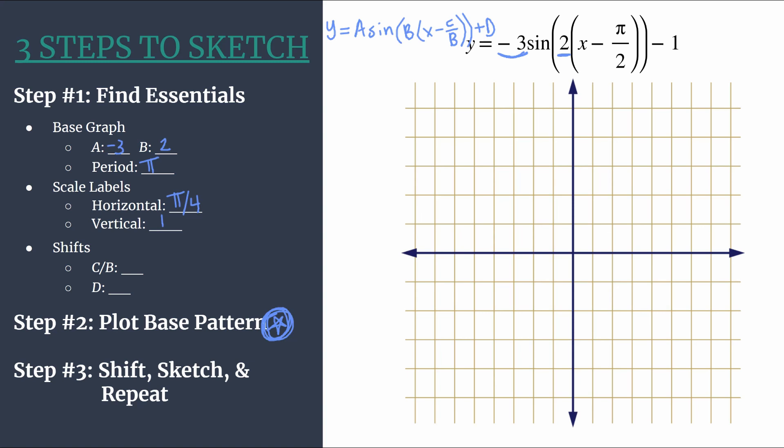So we'll start with the horizontal axis. We're counting by one π over four. So one π over four, two π over four reduces to π over two, three π over four, four π over four, which reduces to π. All right, this is our fourth horizontal tick mark check. This should match the period. It does, so we're on the right track.